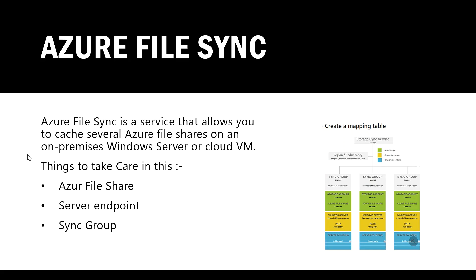In Azure file sync, what we have to take care of is the Azure file share, server endpoint, and sync group. Microsoft has provided a mapping table for cases where there are lots of services and lots of locations syncing to Azure file share. You create this mapping table by adding the store sync service name, region, sync group name, storage account name, file share name, and Windows server path that you are caching. You can also mention the server folders being cached to maintain a record of all shares, syncs, and caching. Now let us jump into the Azure portal.